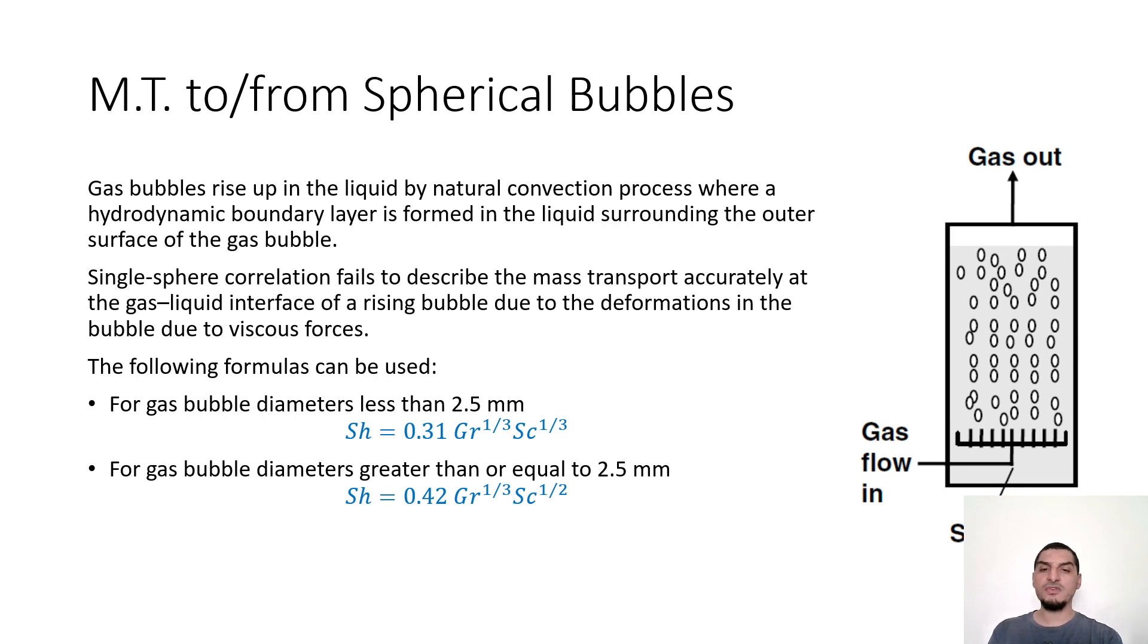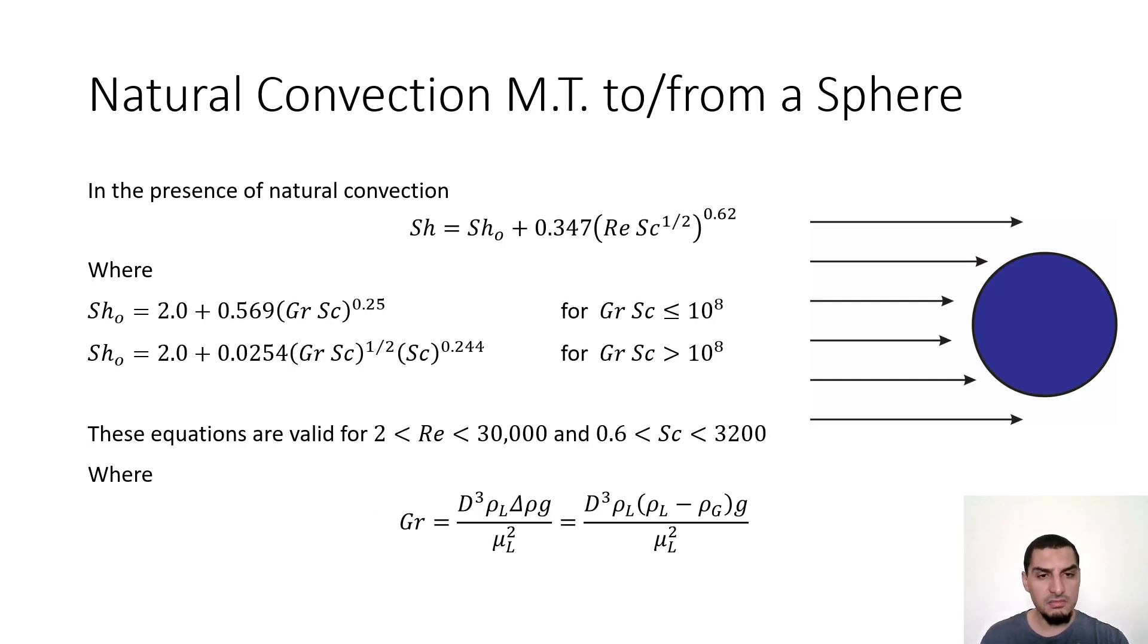One last thing to mention which is mass transfer to or from spherical bubbles. What we said here about the sphere, just to have an idea what system can be represented by a sphere, you can think of this as like a sponge that has spherical shape and has some species in it that diffuses into the outside surface, something like perfume that is coming out, anything like this. Just keep in mind that this has constant diameter and for this case we do the calculations based on constant diameter.